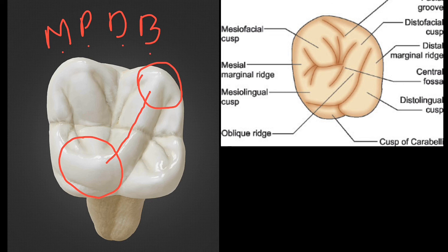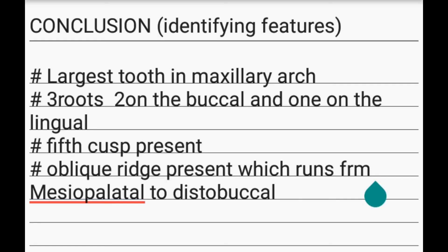You can remember the oblique ridge using the mnemonic MPDB — 'My Parents Divorce' — representing mesopalatal to distobuccal. In conclusion, this is the largest tooth in the maxillary arch with three roots (two buccal, one lingual), a fifth cusp called the cusp of Carabelli, and an oblique ridge running from the mesopalatal to the distobuccal cusp.